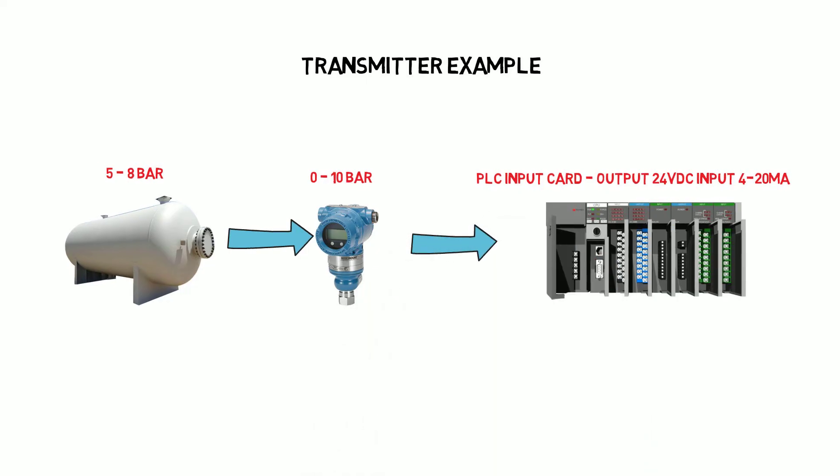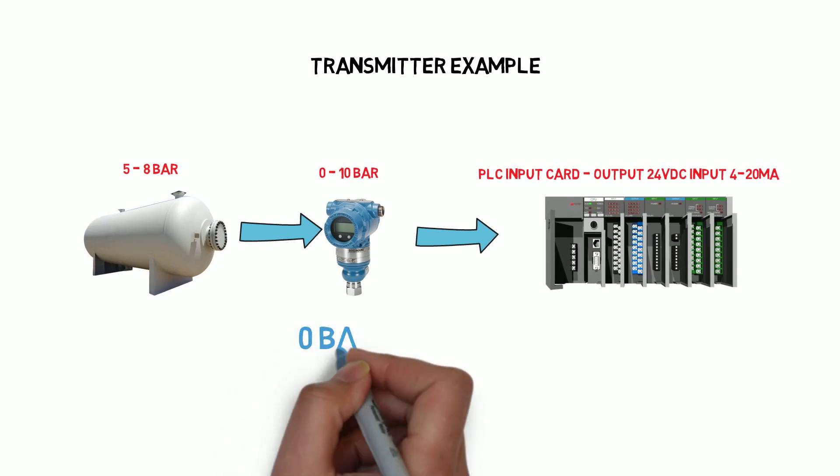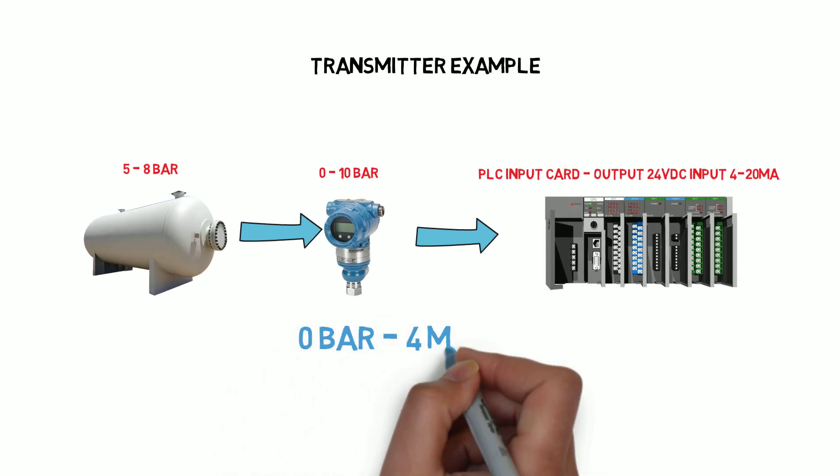The transmitter is powered by the input card voltage, it detects the pressure in the vessel and then manipulates the current in the loop by changing its own internal impedance. So at 0 bar in the vessel the transmitter gives a signal of 4 milliamps.